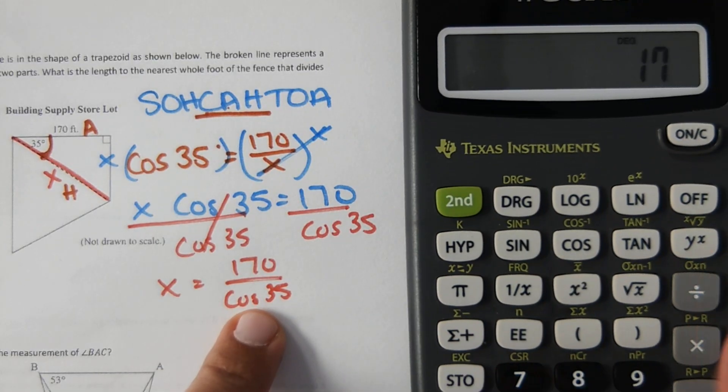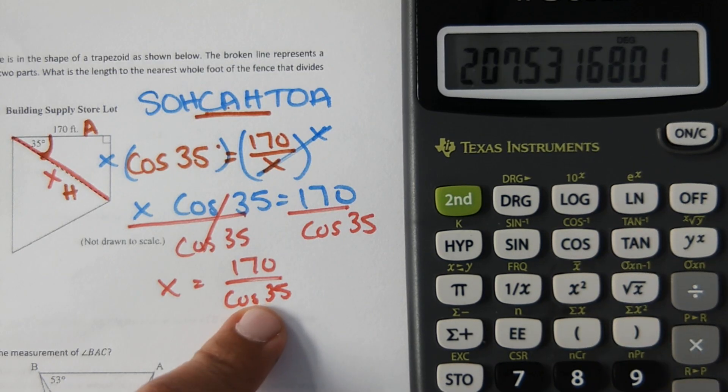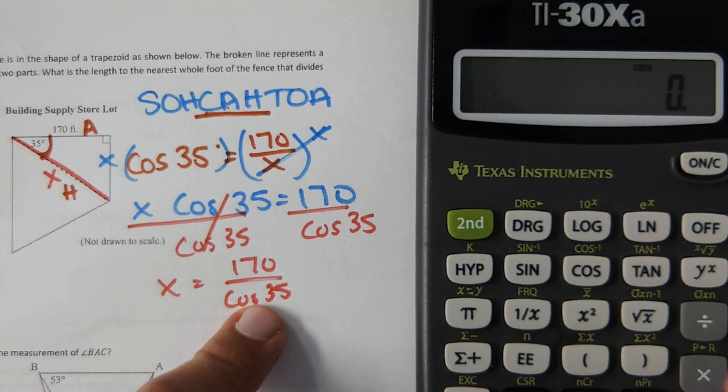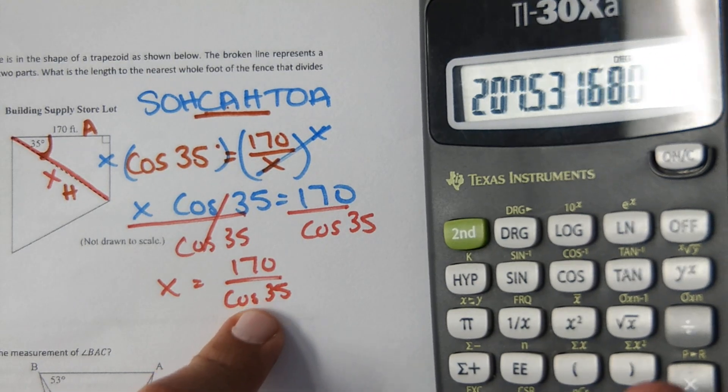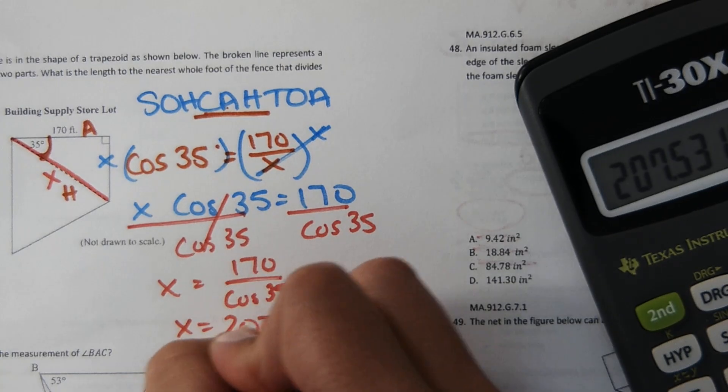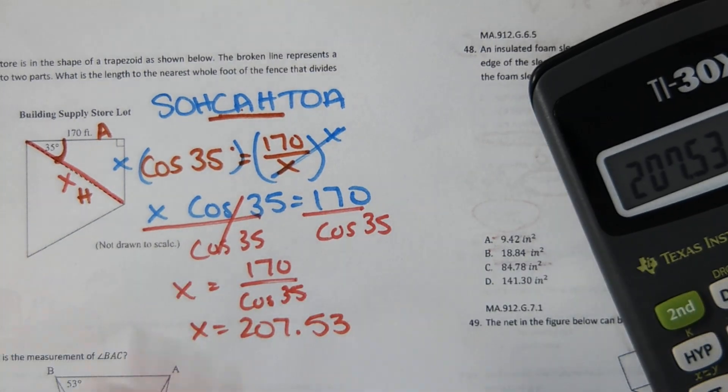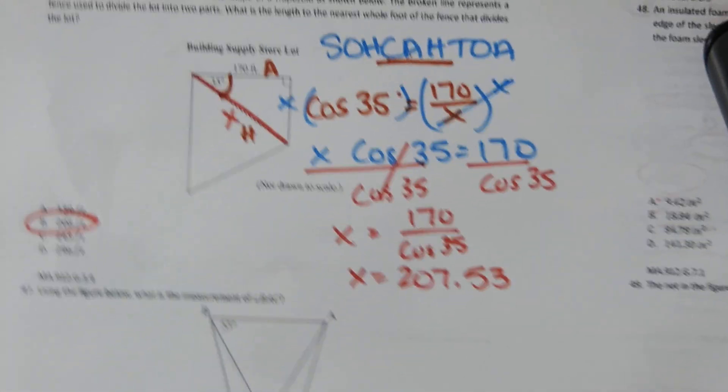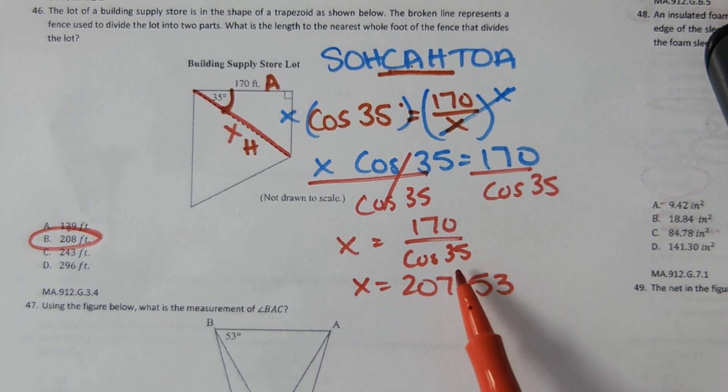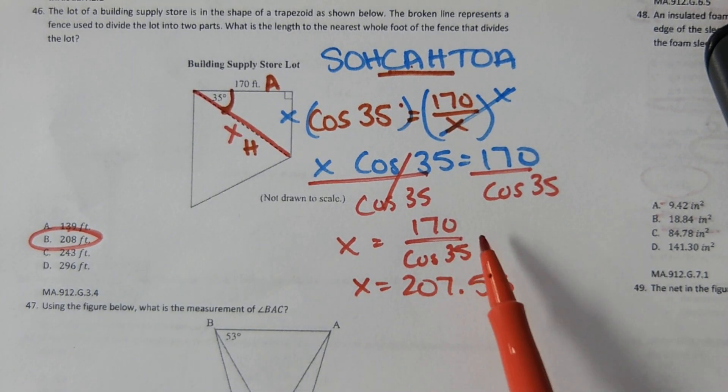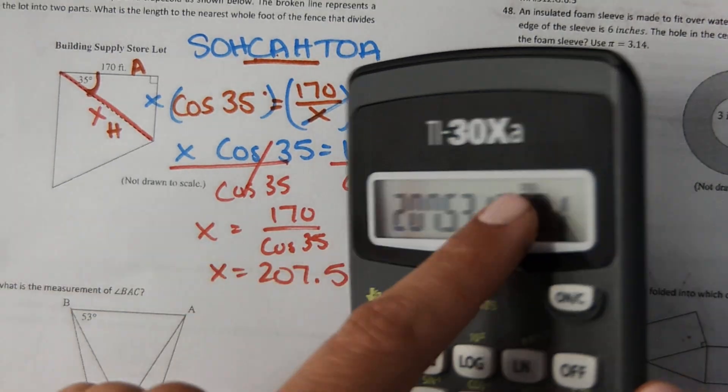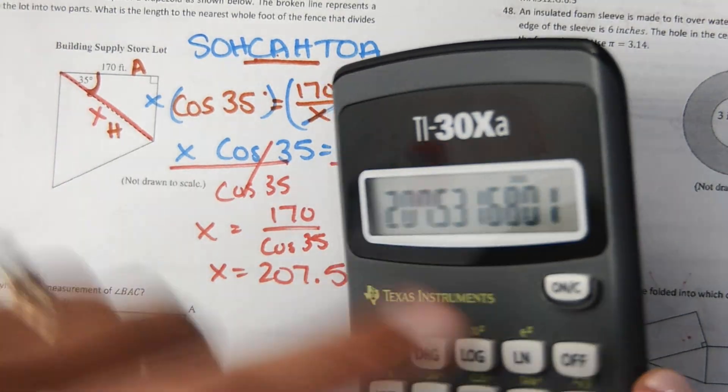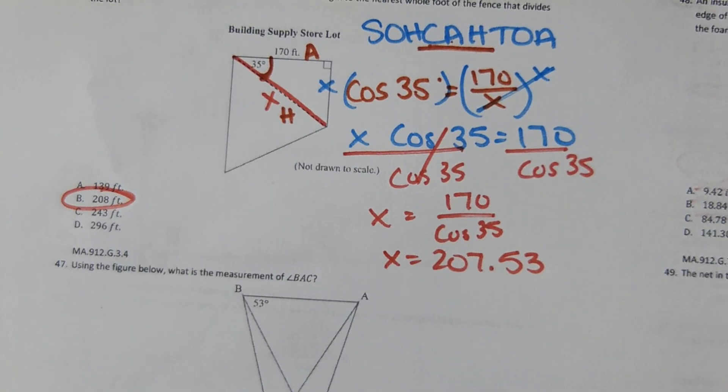Then in the calculator, 170 divided by 35 COSINE equals this number. So again, I did 170 divided by 35 COSINE equals 207.53. So that would be 208. So if you're second-guessing yourself about how to put this in the calculator, you could always use the EOC calculator and just put it in exactly like that. And you wouldn't second-guess yourself. And then if you get an error or like a negative number, it might be because you're in radians instead of degrees. So make sure that you're in degrees.